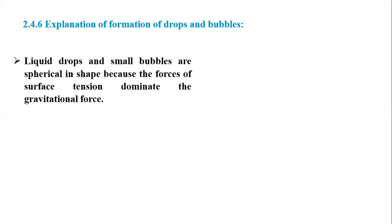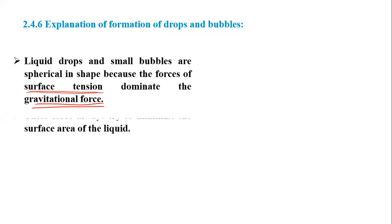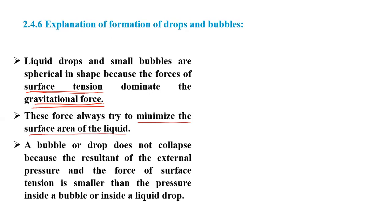Next article: explanation of formation of drops and bubbles. Liquid drops and small bubbles are spherical in shape because of surface tension, which dominates the gravitational force. Because of surface tension, the liquid tries to minimize its surface area. A bubble or drop does not collapse because the resultant of external pressure and surface tension force is smaller than the pressure inside the bubble or liquid drop.